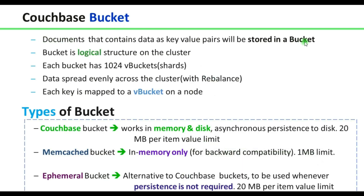A Couchbase bucket is used to store documents. Each bucket has 1024 virtual buckets (vBuckets), which are shards. Data is spread evenly across the cluster using the rebalance option. Rebalance happens whenever you add or remove a node from the cluster. For example, if you have four nodes in your cluster and one bucket, these 1024 vBuckets are segregated evenly — each node holds 256 vBuckets. Each key is mapped to a vBucket on a node.